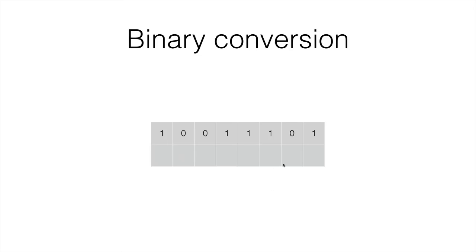Let's try something then. Binary conversion. The number at the right is 1. The next one will be 2, but because it's a 0 we ignore it. The next one is 4, because 1, 2, then 4, then 8, then 16.